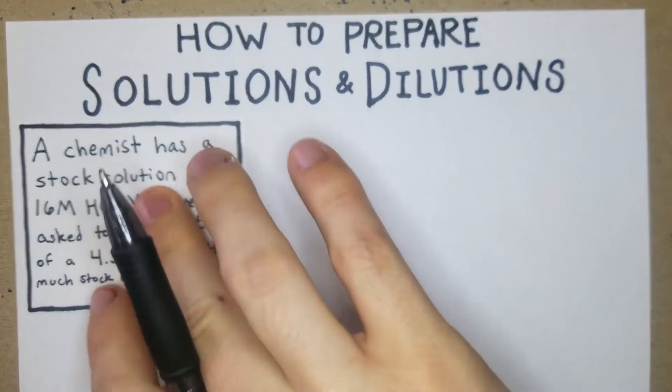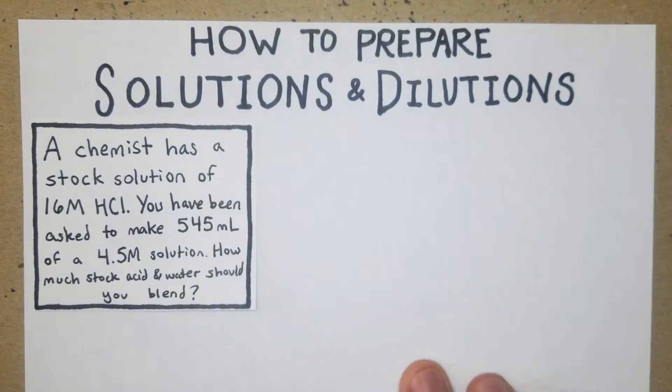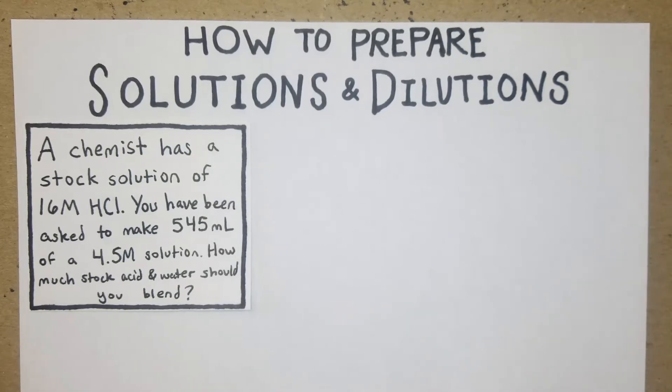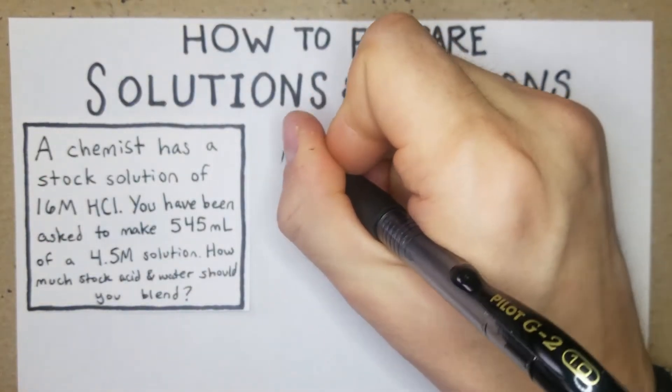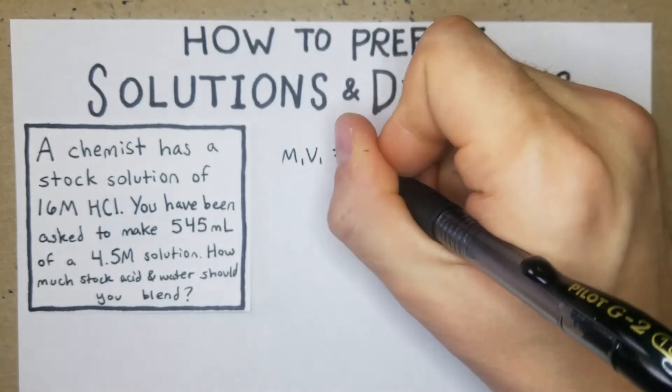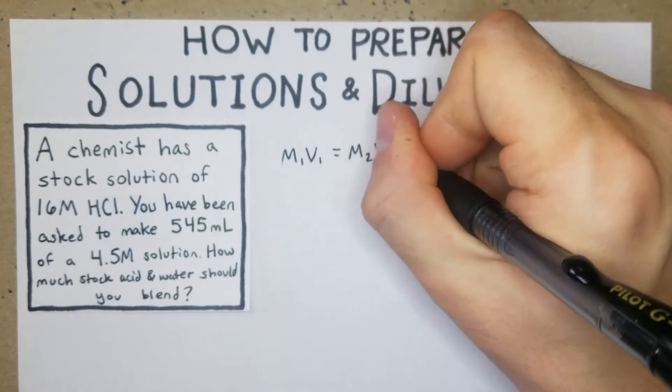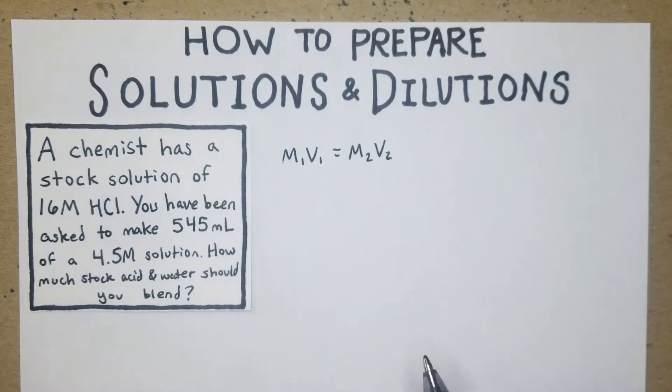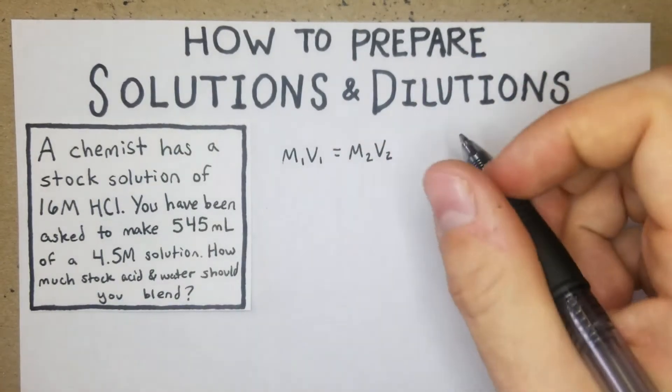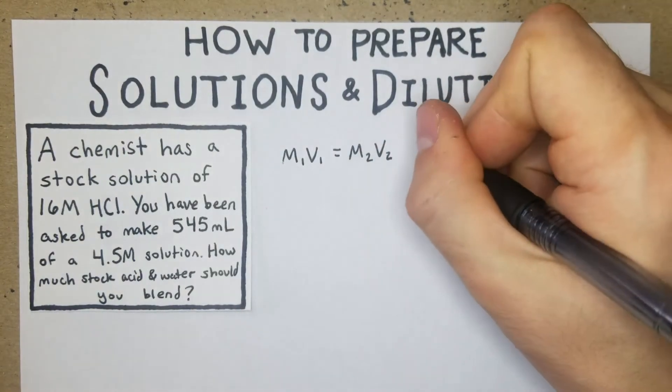So the first problem is a chemist has a stock solution of 16 molar HCl. You have been asked to make 545 mL of a 4.5 molar solution. How much stock acid and water should you blend? So this is a pretty common type of problem, one of the simplest ones of these. And what we're going to do is use M1V1 equals M2V2 to solve it.